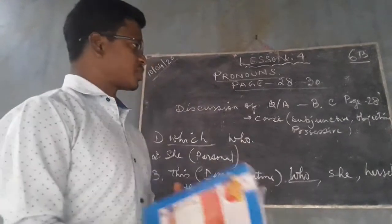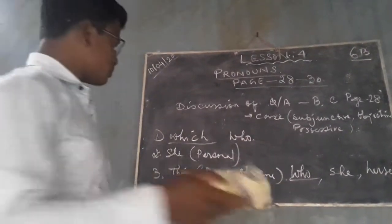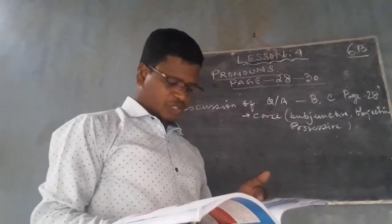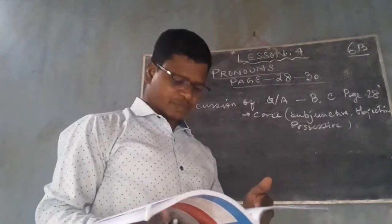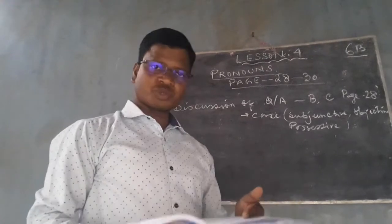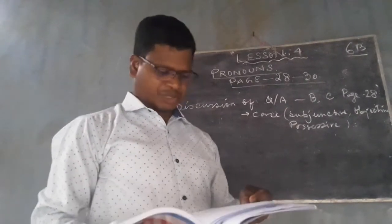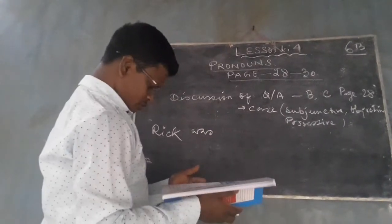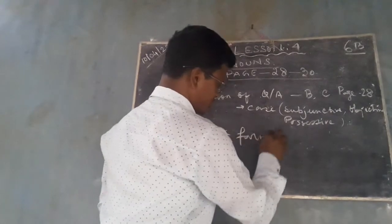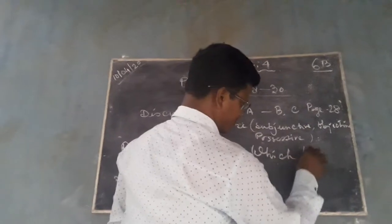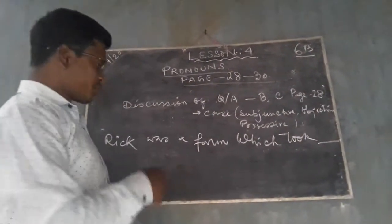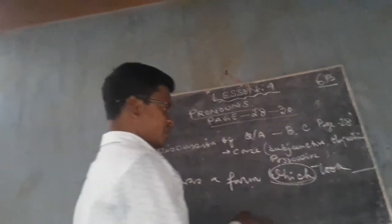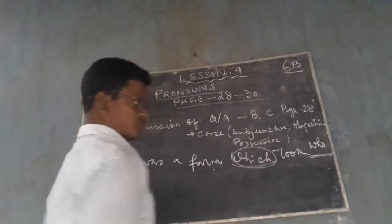Let us move on to question number C. What is written there: each line of the story uses an incorrect pronoun. Circle the incorrect pronouns and write the correct ones in the blanks. For the first one: 'Rick was a fun boy which took...' — the word 'which' is wrong. What will be the correct answer? 'Who.'